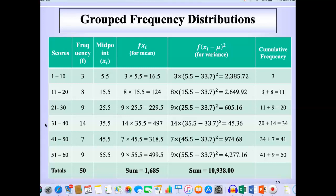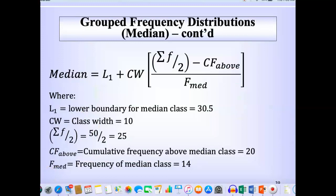For the cumulative frequency above, we know that this is our median class, so just look at the cumulative frequency in the table that's right above that, and that is 20. So the CF above is 20, and the frequency of our median class is just the frequency noted here, 14. We have now gotten all of the values required.